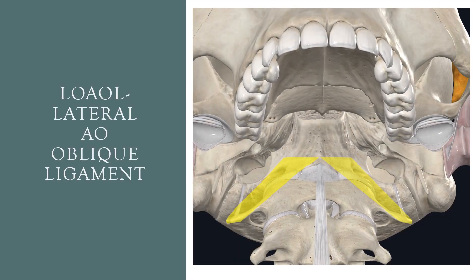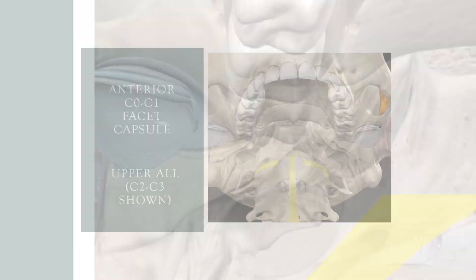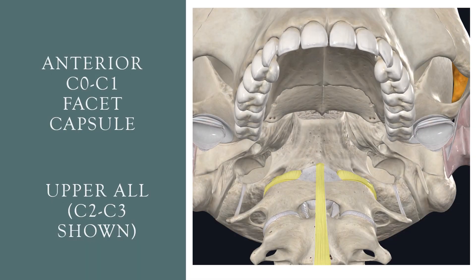We can also inject the lateral AO-oblique ligament from the front only. Like those other anterior ligaments, this one is important in reducing the tendency of the skull to slide backwards or rock backwards. We can also get the anterior longitudinal ligament, which is important in stabilizing C2-3 in extension, as well as the anterior C0-C1 facet capsule. They're both shown in yellow here.